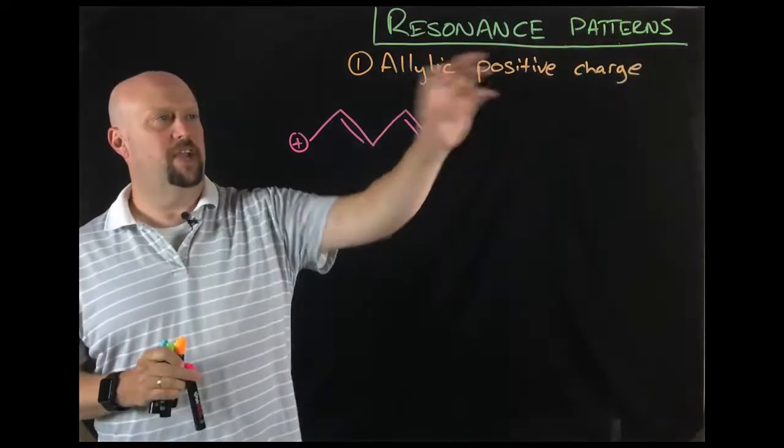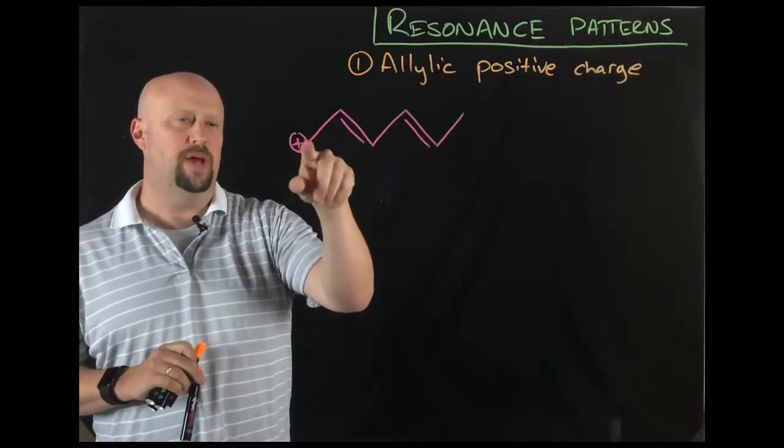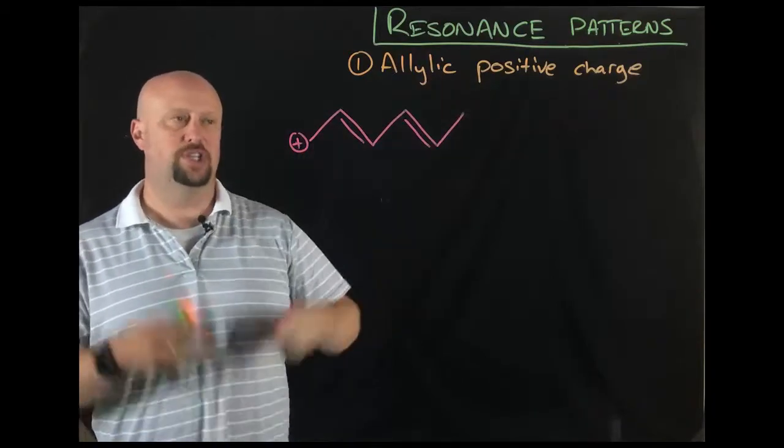Now you could recalculate the formal charges and all that stuff to figure out where that is. But essentially remember that when you move the pair, it displaces the charge. And so you're going to be shifting the charge somewhere else every time that you move a pair. That, by the way, would lead us to a case like the one I'm about to draw for you. So real quick, let's talk about another example of an allylic positive charge.